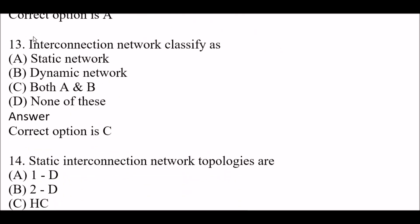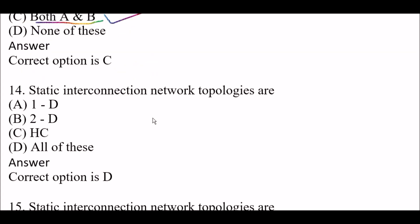Next question: interconnection networks are classified as — option A, static network; option B, dynamic network; option C, both A and B; option D, none of these. The right answer is option C, both A and B. There are two types of interconnection networks: static network and dynamic network.